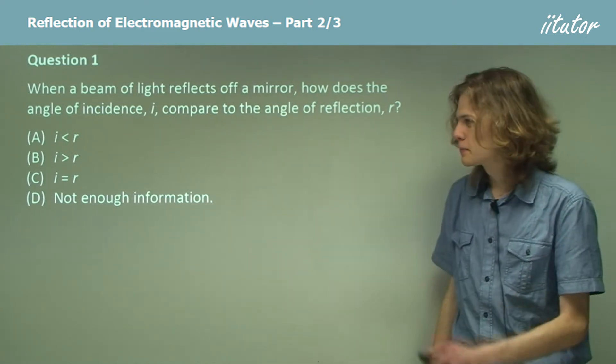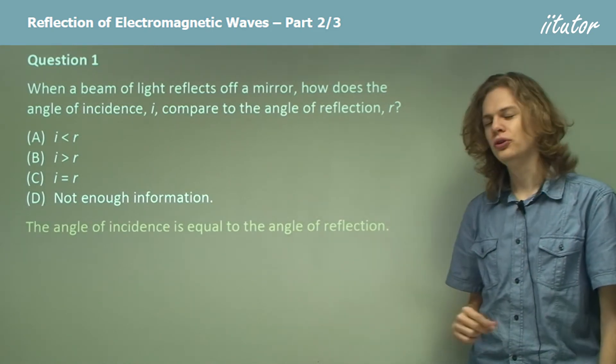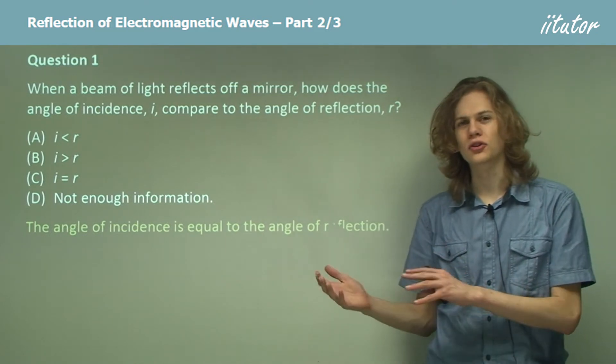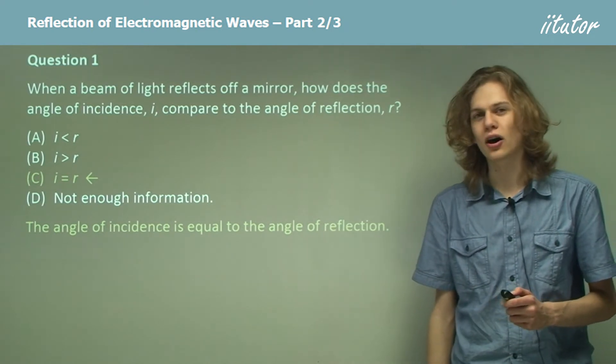The answer is, of course, that the angle of incidence is equal to the angle of reflection. This is true for all waves bouncing off plane mirrors. So our answer is c, i equals r.